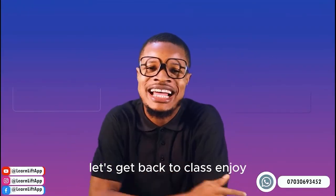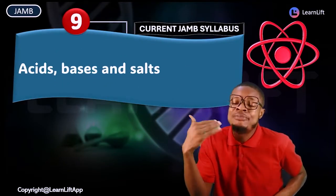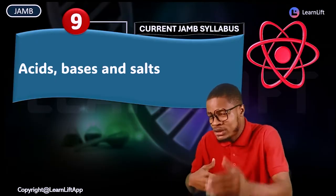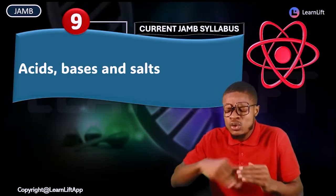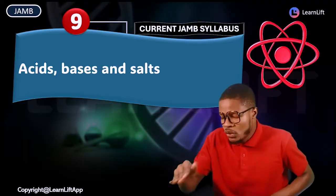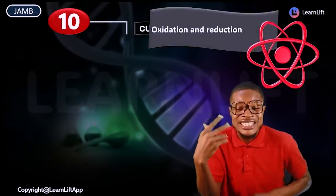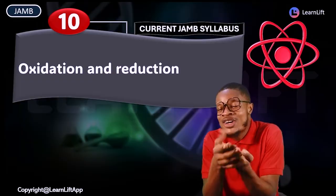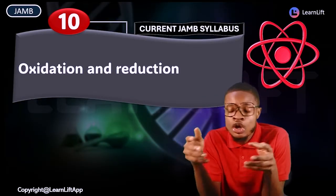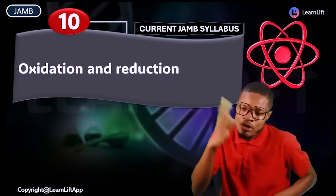Let's get back to class. We go straight into chapter nine: acids, bases, and salts. We look at the various definitions of acids — Arrhenius, Brønsted-Lowry — all of those. We look into bases, treat everything, cover their types, salts, and all the JAM past questions. Then we move into chapter ten: oxidation and reduction. We have five definitions of oxidation and five definitions of reduction. We look at all of them, their differences, various reactions, and cover all the past questions.